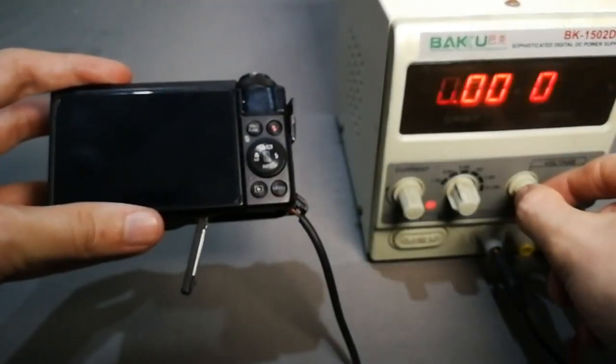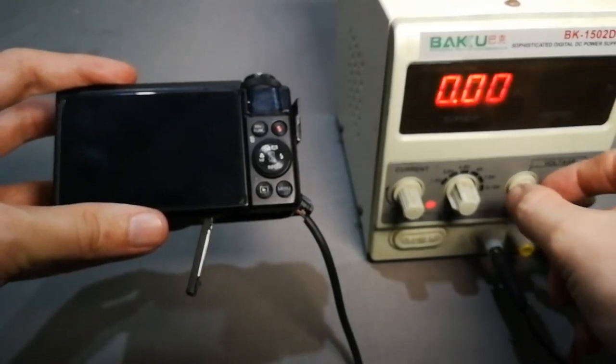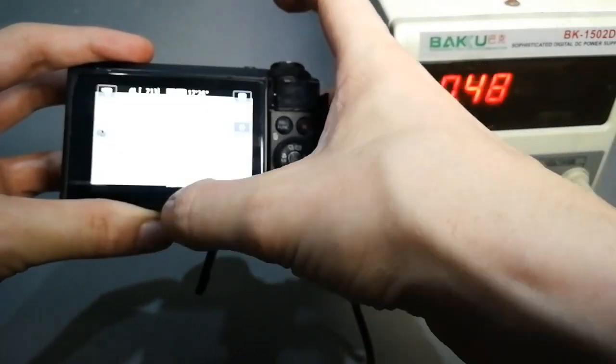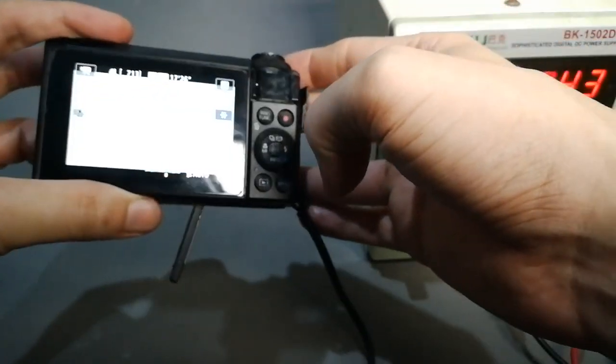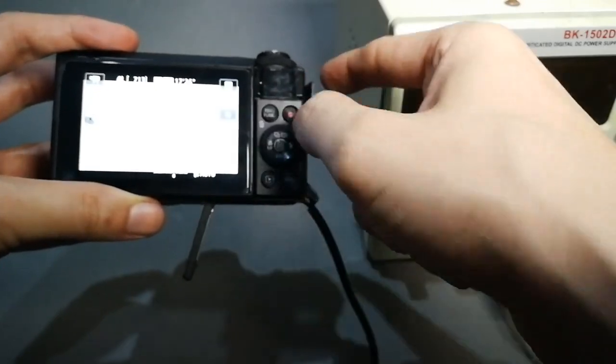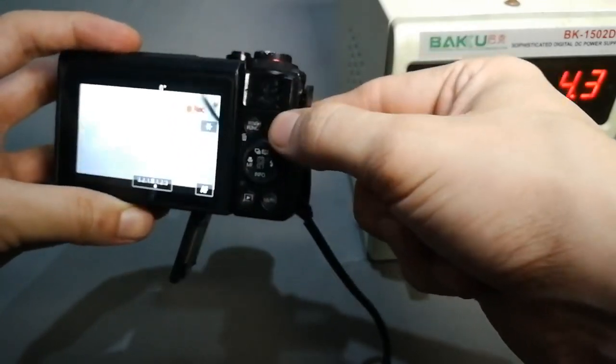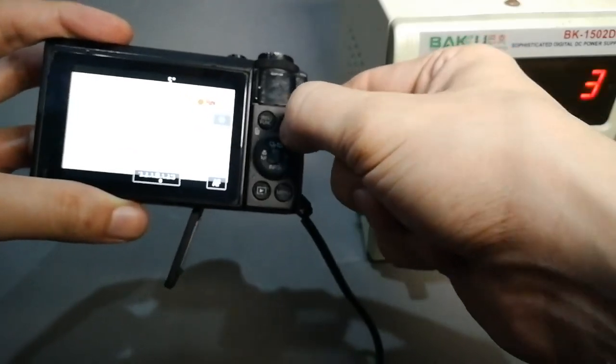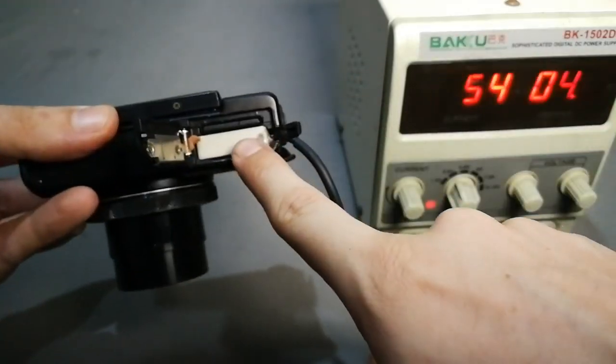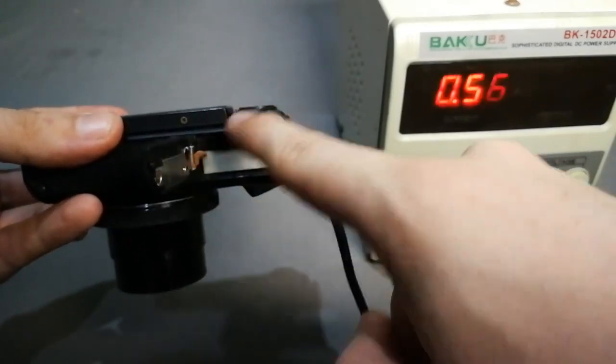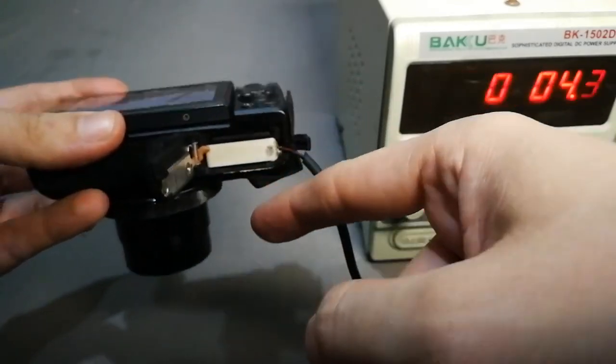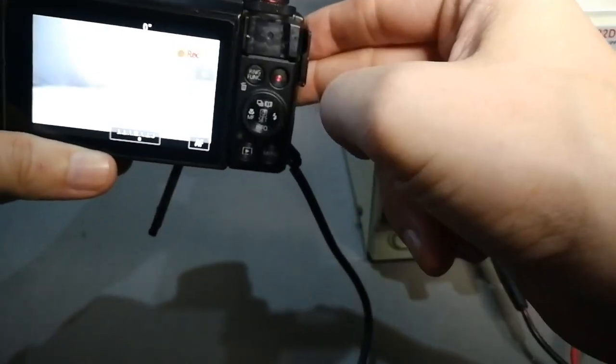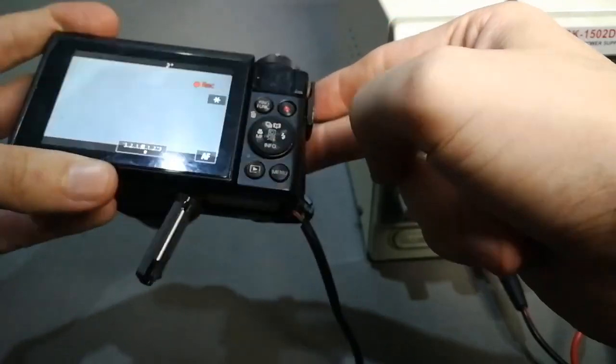Now I'm sorry about the flicker of the power supply but we'll set it to 4.3 volts. Turn it on and there you go. It wants me to set the time and date but our camera is working. It should throw up an error very soon about it not being a genuine battery. Now interesting it's not doing this time. Normally it asks me are you sure this is a genuine battery? I say no. It says are you sure you want to continue? I say yes and it's okay. But there you go we're powering it from an external power supply and we can record for as long as we want.